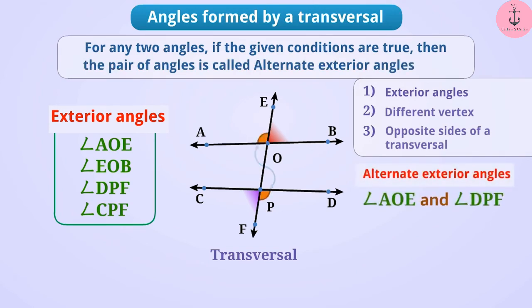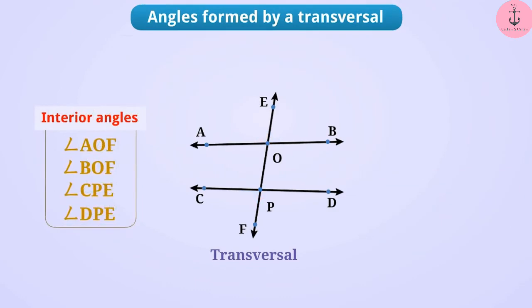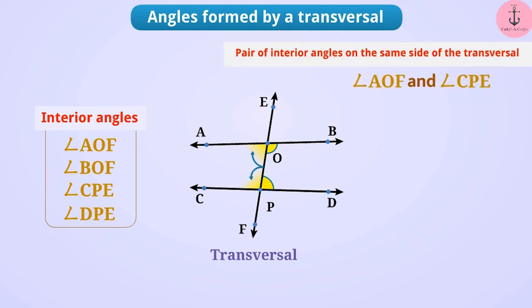Another pair of alternate exterior angles is angle CPF and angle EOB. Now, the transversal EF forms four interior angles. Angle AOF and angle CPE are on the same side of transversal EF, making them a pair of interior angles on the same side of the transversal. On the other side, angle BOF and angle DPE form another such pair.